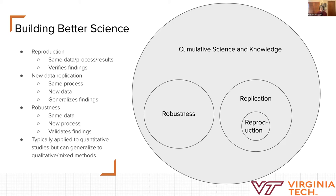Reproduction or reproducibility uses the same data and the same process to find out if you get the same results. It verifies the integrity of the original process and the findings, and that there weren't errors along the way or things that can't be followed through.